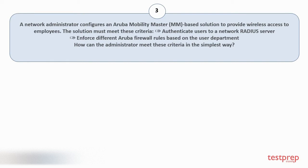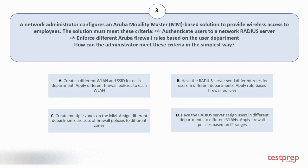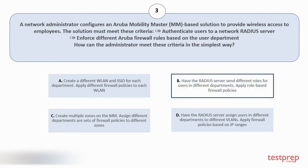Question number 3: A network administrator configures an Aruba Mobility Master-based solution to provide wireless access to employees. The solution must meet these criteria: one, authenticate users to a network RADIUS server; two, enforce different Aruba firewall rules based on the user department. How can the administrator meet these criteria in the simplest way? Option A: Create a different VLAN and SSID for each department, apply different firewall policies to each VLAN. Option B: Have the RADIUS server send different roles for users in different departments, apply role-based firewall policies. Option C: Create multiple zones on the MM, assign different departments' sets of firewall policies to different zones. Option D: Have the RADIUS server assign users in different departments to different VLANs, apply firewall policies based on IP ranges. The correct answer is option B.